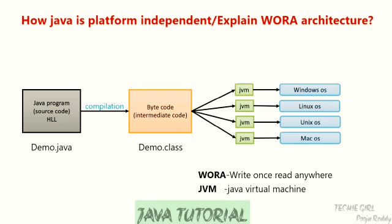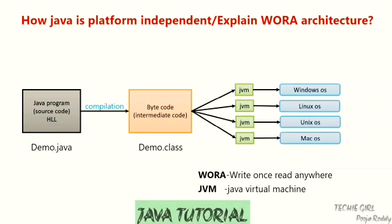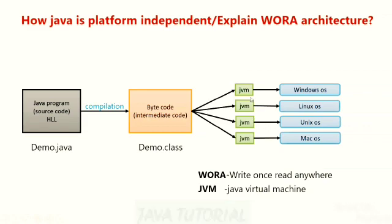Once after getting the bytecode or intermediate code, since the machine cannot understand bytecode, we need to convert this bytecode to machine code. For that, in Java we have JVM, which stands for Java Virtual Machine, which provides the runtime environment.